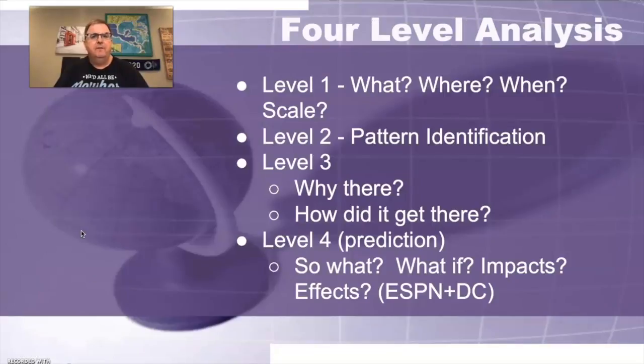So let's look at this. What we're going to do is look at a series of maps. We're going to use four-level analysis, which many of you are familiar with. We're going to look at what, where, when, and scale. And I'll help you with that. Then we're going to have you guys analyze patterns by looking at the patterns of how COVID-19 has been spreading over time. We're also going to ask you to think about why there, how did it get there? What were the processes that spread the disease? And how can we make sense of this? And trying to define that pattern with the types of diffusion that I just mentioned.